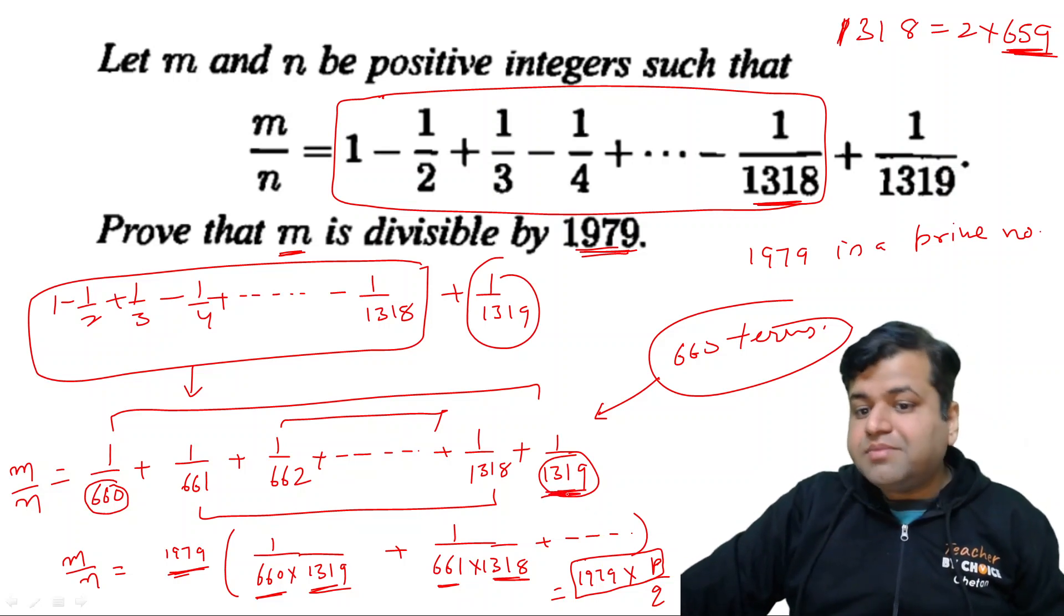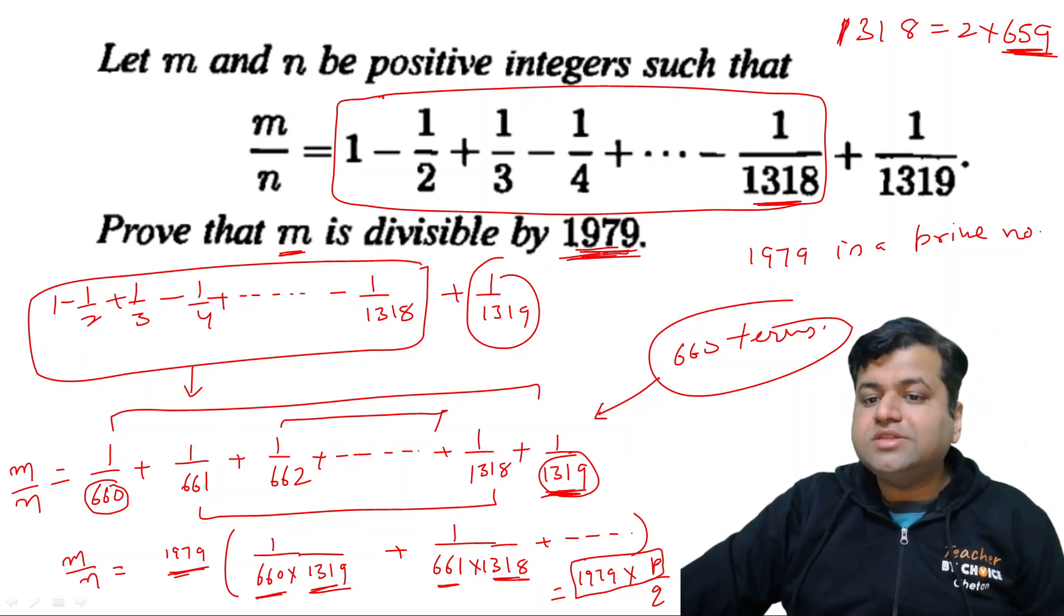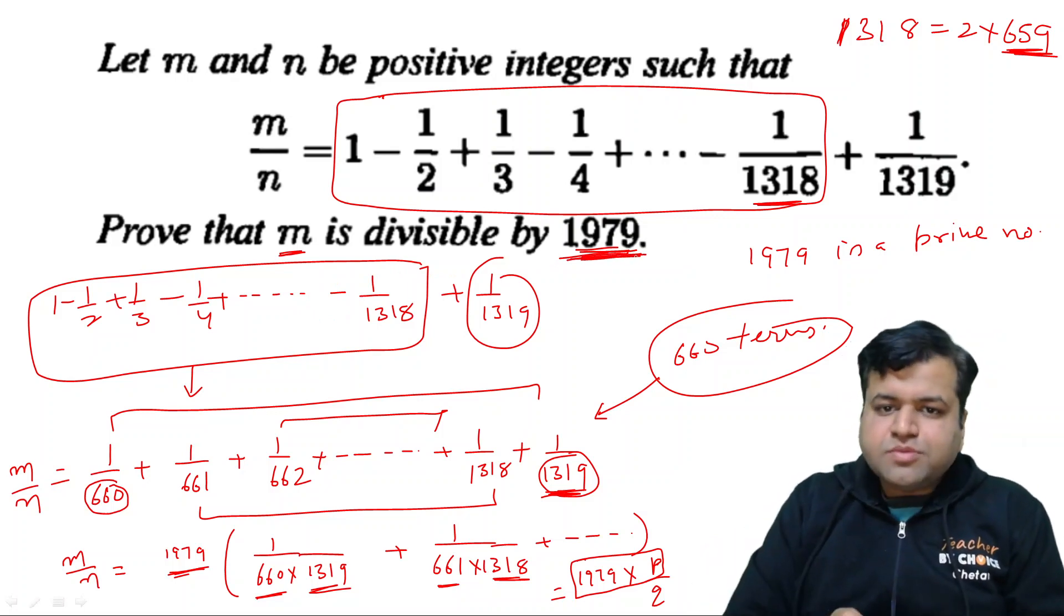Now our m will be 1979 into p. And clearly, since 1979 is a prime number, and q have each factor, each prime factor, which is less than 1979. Because maximum number is 1319. So we can definitely claim that m must be divisible by 1979. So that was the proof. And I hope you all have understood.